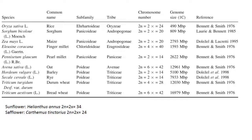Pearl millet (Pennisetum glaucum) has 14 chromosome numbers and a 2.6 Gb genome size. Oat (Avena sativa) has around 12–13 Gb genomic size. Barley (Hordeum vulgare) also has one of the largest genomic sizes, with 14 chromosome numbers. Rye has 14 chromosome numbers and 7.9 Gb size. Triticum turgidum (durum wheat) has 12 Gb and tetraploid oat is around 16 Gb.